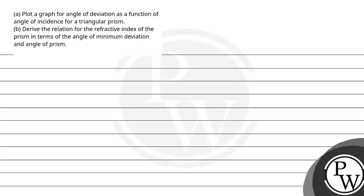Hello Bacho, let's read this question. The question says: Plot a graph for angle of deviation as a function of angle of incidence for a triangular prism. Part b: Derive the relation for refractive index of the prism in terms of angle of minimum deviation and angle of prism.